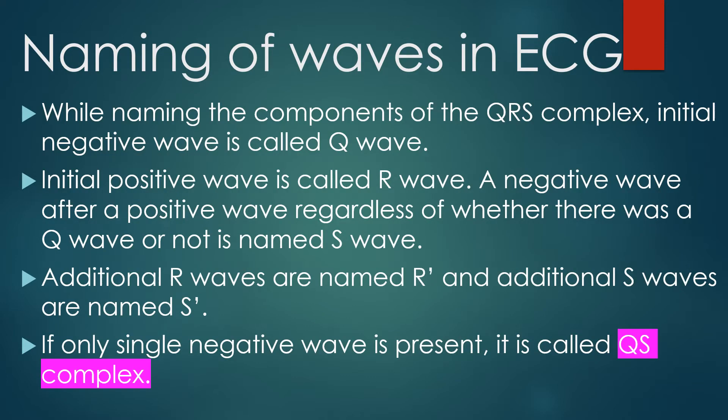While naming the components of the QRS complex, the initial negative wave is called the Q wave. The initial positive wave is called the R wave. A negative wave after a positive wave, regardless of whether there was a Q wave or not, is named the S wave. Additional R waves are named R-prime and additional S waves are named S-prime. If only a single negative wave is present, it is called the QS complex.